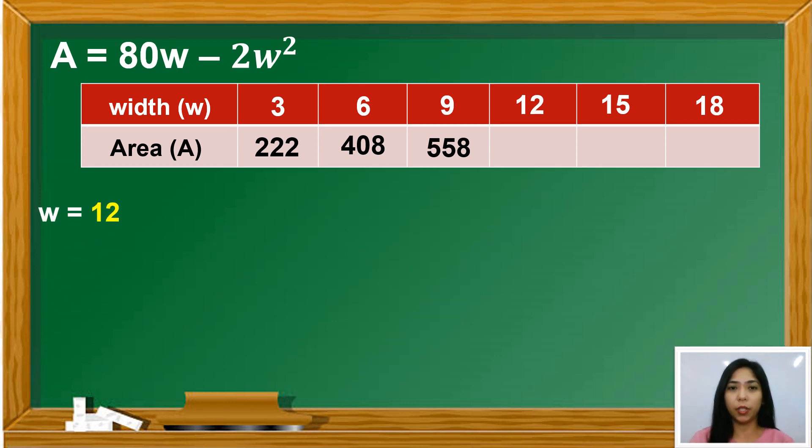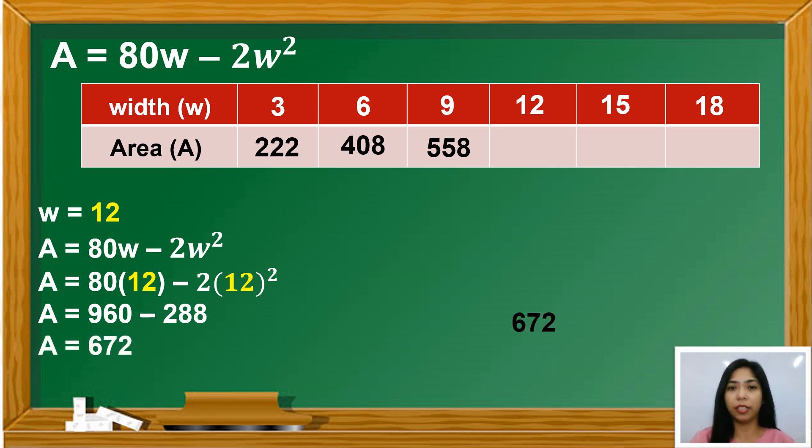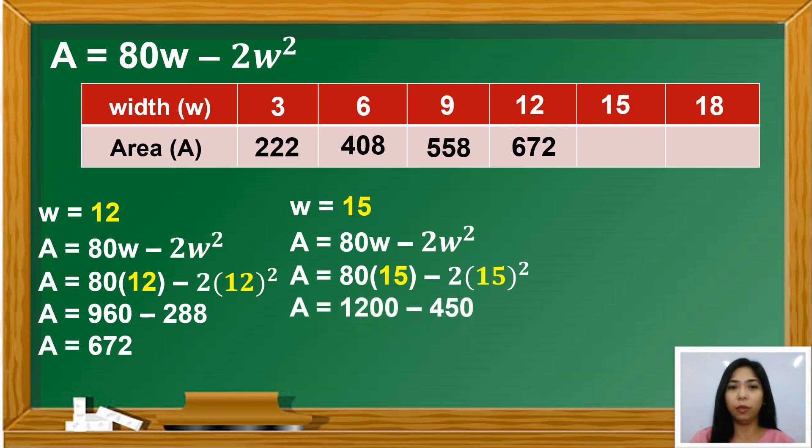If W equals 12, then we have A equals 80 times 12 minus 2 times 12 squared. So we have 960 minus 288. Therefore, A equals 672. If W equals 15, then we have A equals 80 times 15 minus 2 times 15 squared. So we have 1,200 minus 450. Therefore, A equals 750.